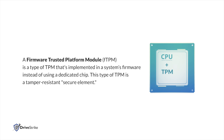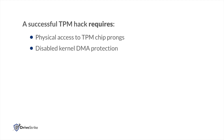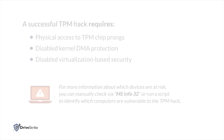fTPM configurations are susceptible to different weaknesses. In order to execute the TPM hack, its chip prongs must be physically accessible, kernel DMA protection disabled, and virtualization-based security disabled. If you need to know which devices are at risk, you can manually check via MSINFO32 or run a script to identify which computers are vulnerable to this TPM hack.